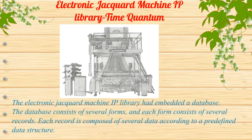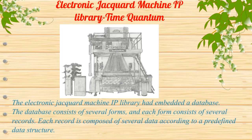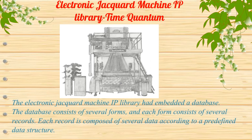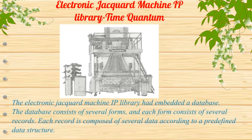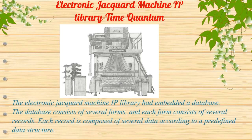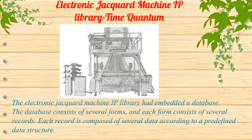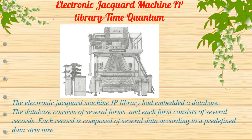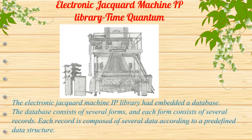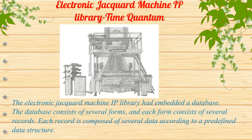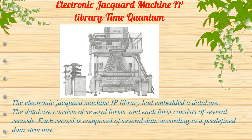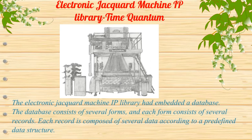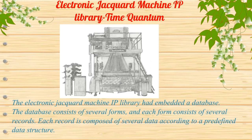The electronic jacquard machine IP library has an embedded database. The database consists of several forms, and each form consists of several records. Each record is composed of several data fields according to a predefined data structure.